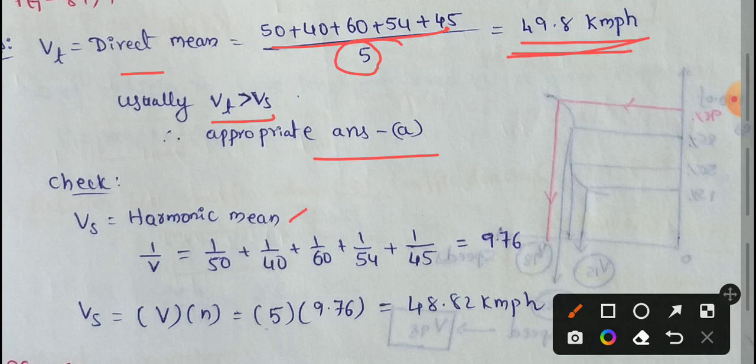Harmonic mean calculation: I have 5 observations, so I will take the inverse sum: 1/50 plus 1/40 plus 1/60 plus 1/54 plus 1/45.